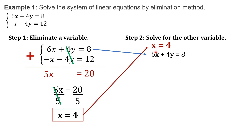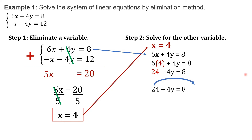Using the value of x, we will replace x in this equation with positive 4. Then multiply: 6 times 4 will give us 24. Copy 4y equals 8. Since we are solving for y, we have to leave y alone. Transpose this term to the other side. Positive 24, when transposed, will change sign and become negative 24. Combine it with positive 8: 8 minus 24 will give us negative 16.